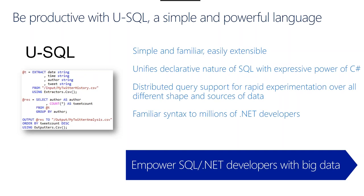We've also invested a lot in distributed query support. This allows you to query data in the Data Lake, Azure Blob Store, SQL Server, SQL DW, and SQL databases — all in the same query. For big data workflows, this is more productive because you don't have to export data to CSV, move it into your Hadoop system, and then write your job. You can query across sources directly. We've cut and pasted Hive queries or T-SQL queries into U-SQL with only minor cleanup needed. We've invested a lot to preserve the familiarity of SQL.